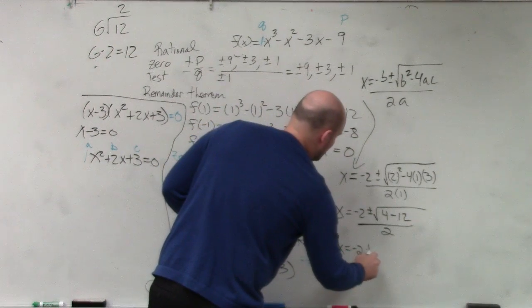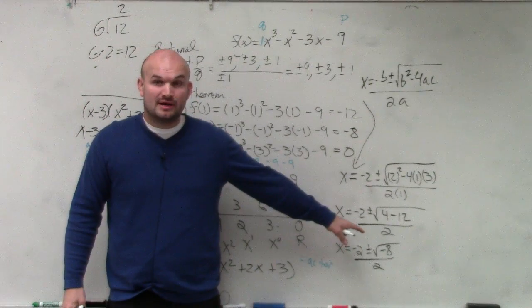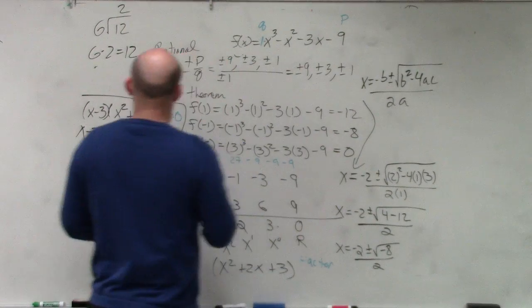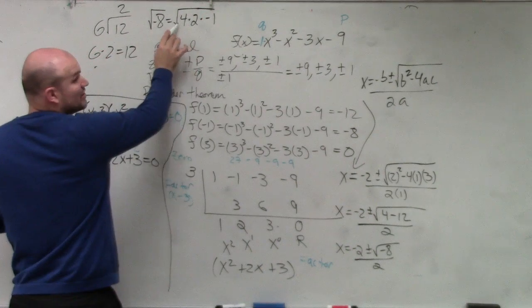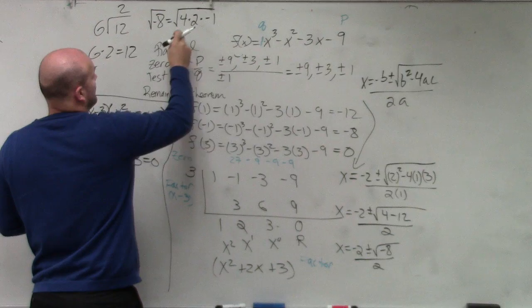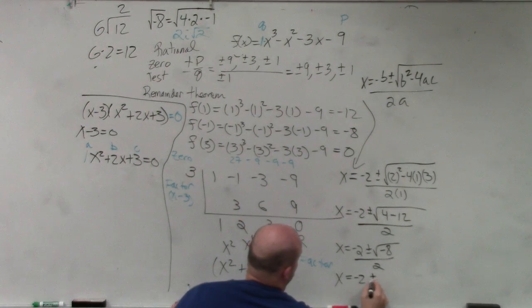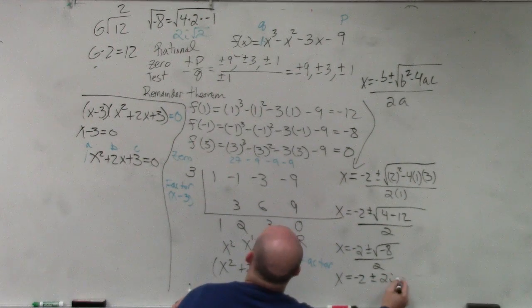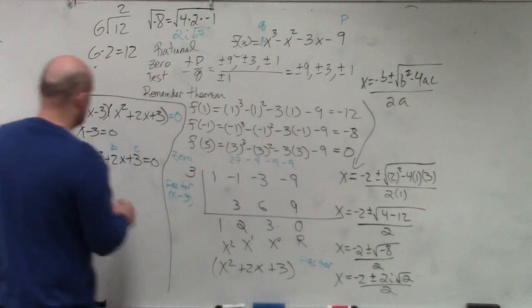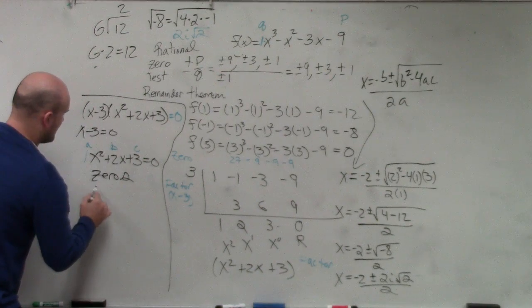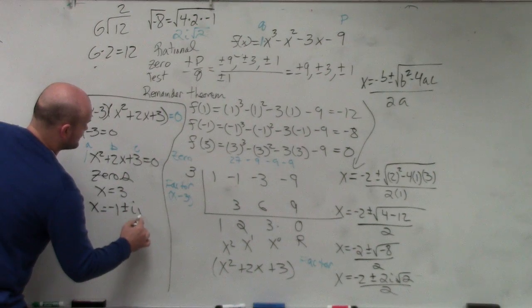So therefore x equals negative 2 plus or minus the square root of negative 8 divided by 2. Can we simplify the square root of negative 8? It's not real anymore, right? So therefore we can break square root of negative 8 down into 4 times 2 times negative 1, where the square root of 4 is 2, square root of negative 1 is i, and that's the square root of 2. So therefore this simplifies to x equals negative 2 plus or minus 2i times the square root of 2 over 2. Well, remember that 2 divides into both of those answers. So my zeros are x equals 3, x equals negative 1 plus or minus i times the square root of 2.